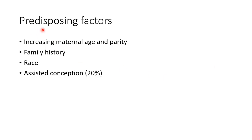Now let us see about the predisposing factors for multiple pregnancy. These include increasing maternal age and increasing parity, family history of multiple pregnancy, race, and assisted conception, all of which lead to increased incidence of multiple pregnancy. Almost 20% of in vitro fertilization cases lead to multiple pregnancy.